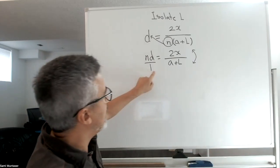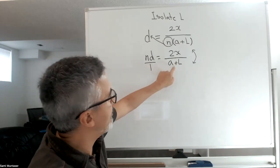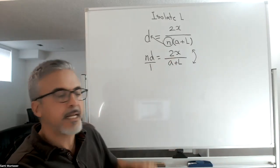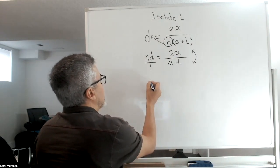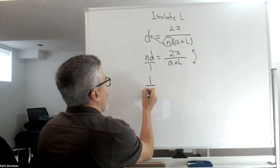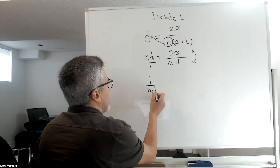Since we have one fraction on the left side of the equal sign and one fraction on the right hand side of the equal sign, then we could rotate all of this. So that becomes one over nd equals a plus L over 2x.